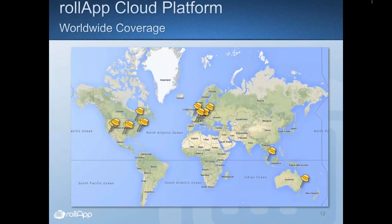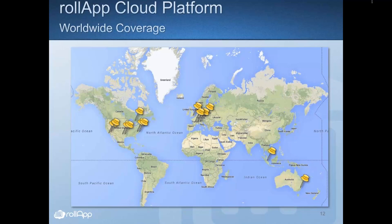Our cloud is geographically distributed — we cover many locations, and we have more presence in areas where the majority of our customers come from. It's very important that the application server running the application for the user is as close to the user as possible, because every mile of distance adds latency. We want applications to be responsive and behave close to how they would if installed locally. Our system is designed to make it easy to cover new regions when the need arises.